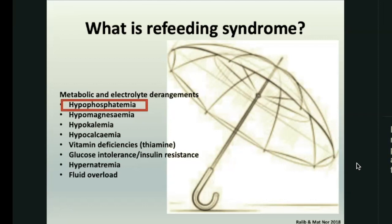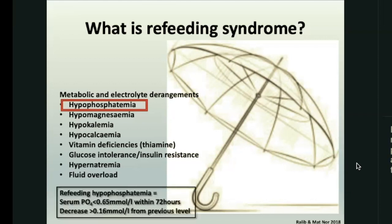The phosphorylation of ADP to ATP uses further phosphate, dropping it even lower. Thiamine is a cofactor in that process, so you get a reduction in thiamine, which can contribute to lactic acidosis. At the end of the day, you get a patient with deranged electrolytes, fluid overload, high sodium, insulin resistance, and acidosis due to thiamine deficiency. Refeeding syndrome is an umbrella term for all of these derangements. Hyperphosphatemia is the hallmark feature.